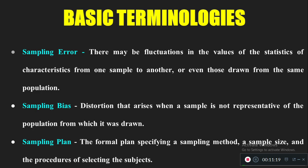A sampling plan is like a research design — it describes how we are going to select a specific sample. It tells what method to use: probability or non-probability. The plan also specifies what size of sample to select and what procedure to use — for example, whether to use a random number table method, lottery method, or tossing a coin. The sampling plan tells what method, what technique, and what size of sample to take.